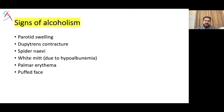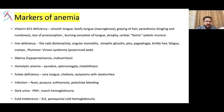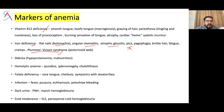Signs of alcoholism include parotid swelling, Dupuytren's contracture, spider nevi, white nails, palmar erythema, and puffy face. Markers of anemia include signs of vitamin B12 deficiency and iron deficiency: koilonychia, angular stomatitis, atrophic glossitis. History of pica — eating mud or soil — brittle hair, or painless nail changes. Plummer-Vinson syndrome in iron deficiency is also important.